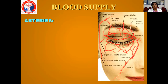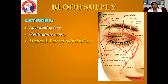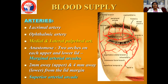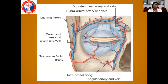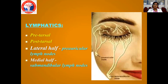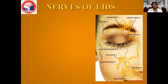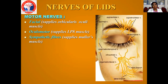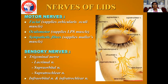Coming to the blood supply — it is supplied by the lacrimal artery, ophthalmic artery, medial and lateral palpebral arteries. These anastomose on the upper and lower lid forming the marginal arterial arcades, usually situated 2mm away from the upper lid margin and 4mm away from the lower lid margin. There is also an additional superior peripheral arterial arcade. For lymphatics, you have pretarsal and posttarsal lymphatics — from the lateral half it drains into the preauricular lymph nodes and from the medial half into the submandibular lymph nodes. The nerve supply: facial nerve and oculomotor nerve supply the LPS muscle; sympathetic fibers supply Müller's muscle; and the sensory nerve is mainly the trigeminal nerve.